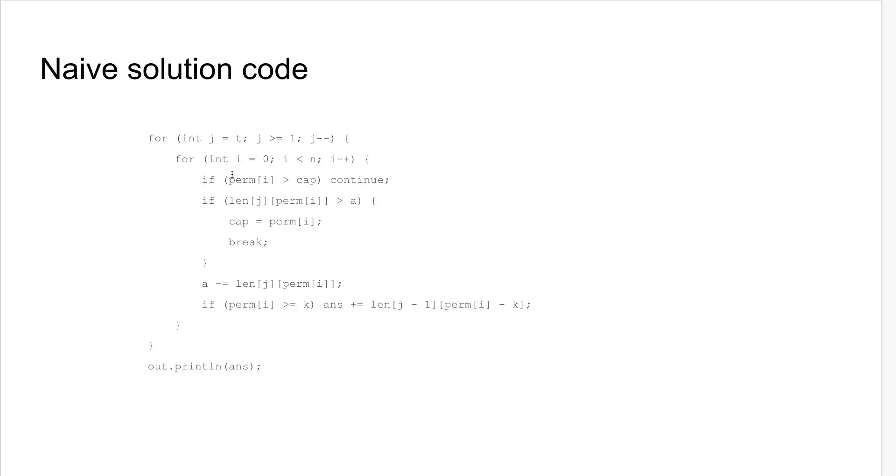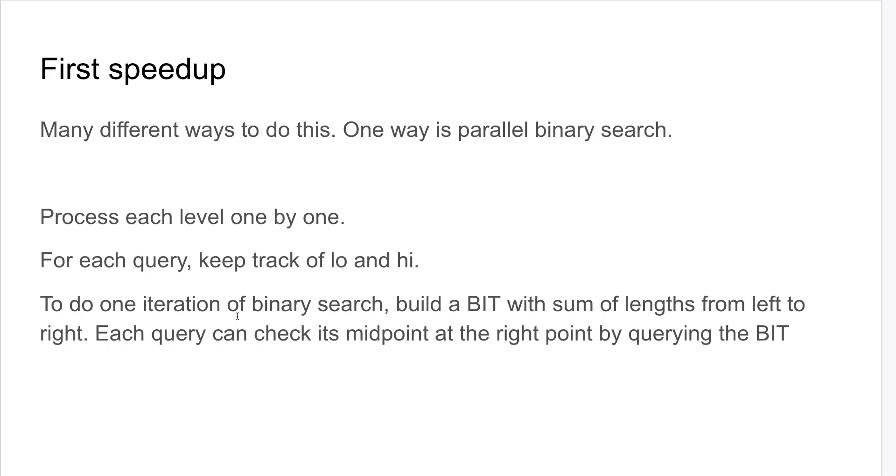And then since we're basically building, we can build a binary indexed tree of the sum of the lengths from left to right for each prefix of the sequence. And then each query can just check its midpoint at the right point in the BIT.